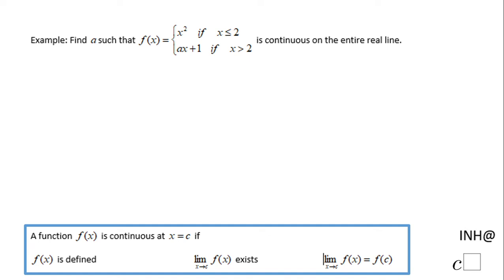Welcome or welcome back to I Need Help at C Squared. In this example, we need to find a such that this function is continuous on the entire real line, and I'm going to use this condition here for a function to be continuous to find a.